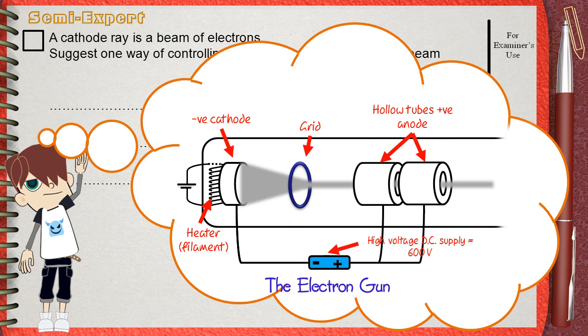The cathode and the anode are connected to the DC high voltage power supply. The main method to control the beam of electrons that is provided by the manufacturer of the CRO is the grid.